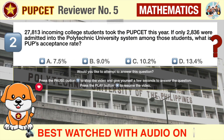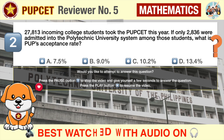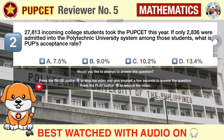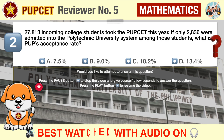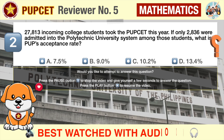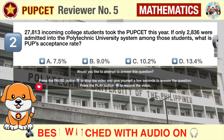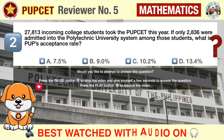Question number two: 27,813 incoming college students took the PUPCET this year. If only 2,836 were admitted into the Polytechnic University system among those students, what is PUP's acceptance rate? A) 7.5, B) 9, C) 10.2, D) 13.4.